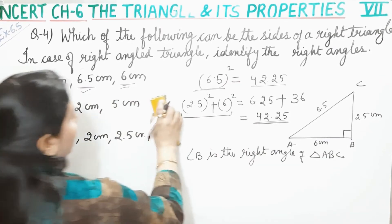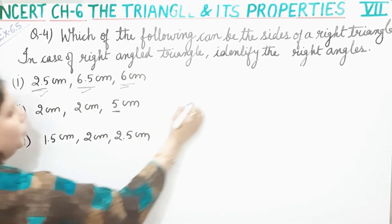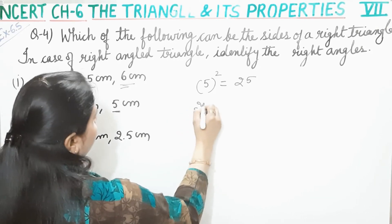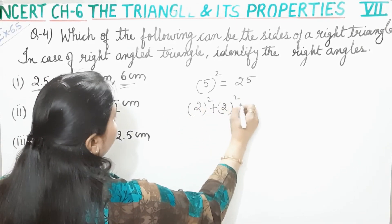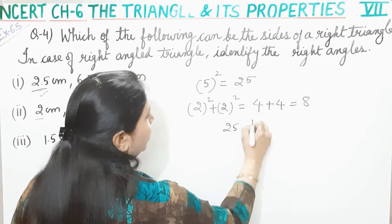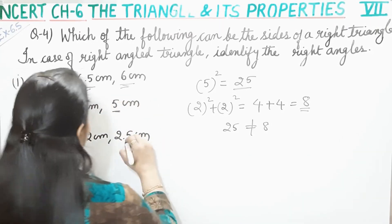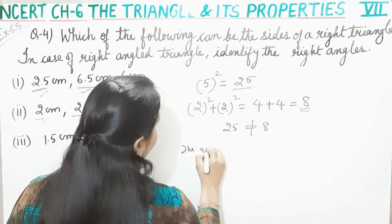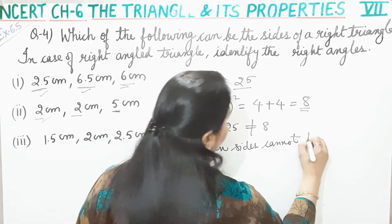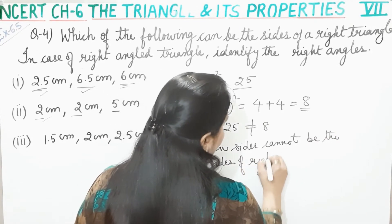Now the next part. Next part mein bhi hum longest dekhte hain. Longest kaun si hai — hamaari 5. Toh 5 ka square kitna hoga? 25. Aur ab in dono sides ka square dekhte hain: 2 ka square plus 2 ka square. 2 ka square is 4, and 2 ka square is 4, toh kitna hai? 8. But 25 is not equal to 8. Toh it means ki ye jo sides hain ye right triangle ki sides nahi hain. So these given sides cannot be the sides of a right triangle.